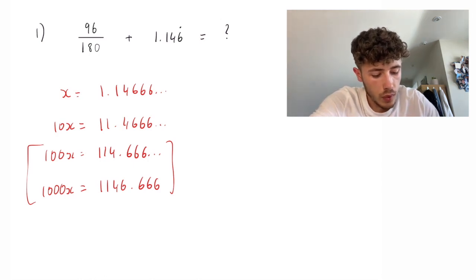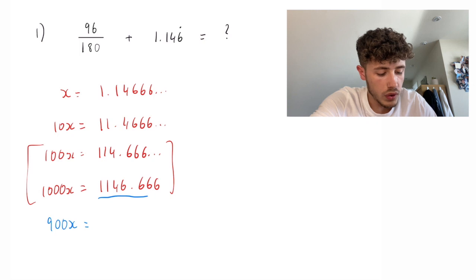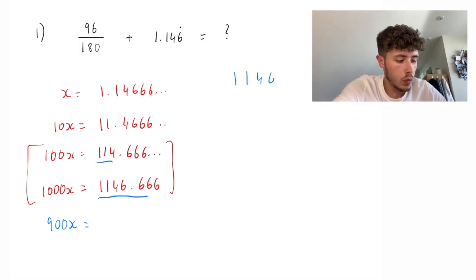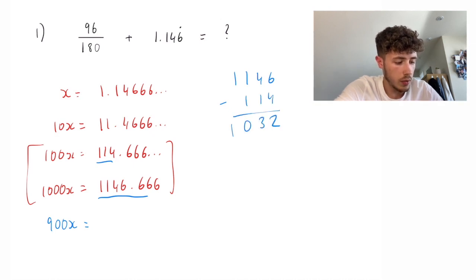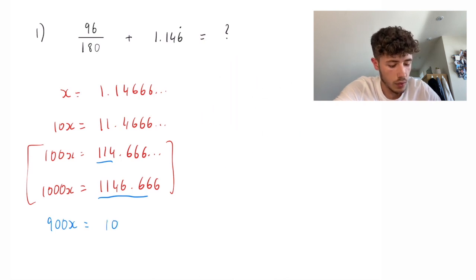So, if we do 1,000x take away 100x, that's going to be 900x is equal to 1146 take away 114. So, 1146 take away 114 is going to give us the 2 there, 3, 0, 1. So, 1032.